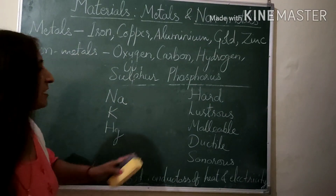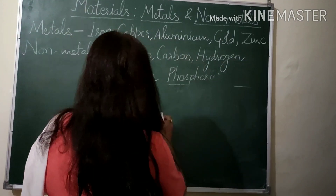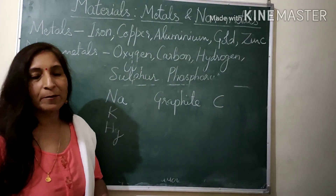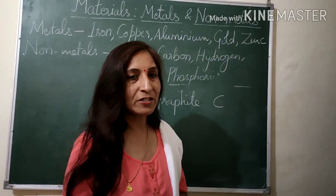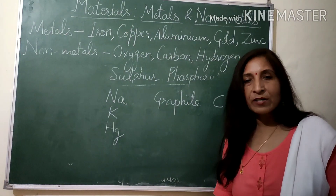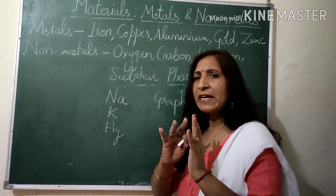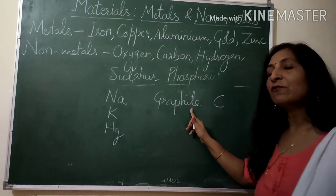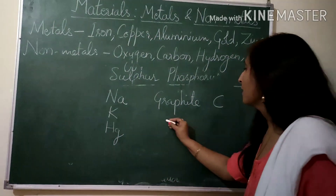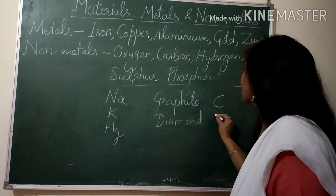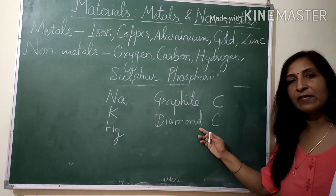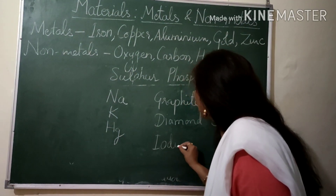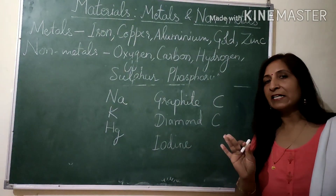Now for exceptions among non-metals: Graphite (symbol C, a form of carbon) is a good conductor of electricity, unlike other non-metals. If you cut open a cell from a torch or battery, you will find a carbon rod inside — that is actually a graphite rod — used because it conducts electricity. Diamond (also symbol C, another form of carbon) is a non-metal but is hard. Iodine is a non-metal but is lustrous.